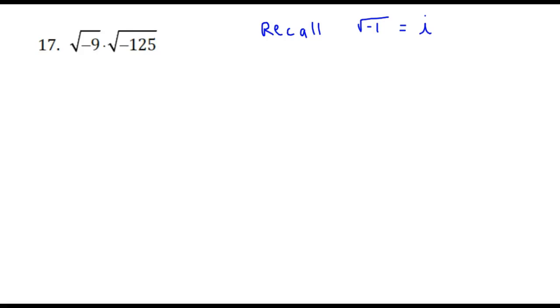For the next four examples, we're going to be working with complex numbers. One of the things we need to remember is that a complex number involves this imaginary number called i, and the definition of i is that i equals the square root of negative 1. This allows us to work with square roots of negative numbers.